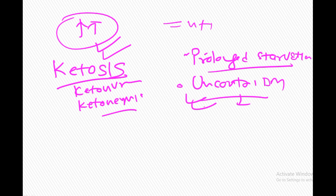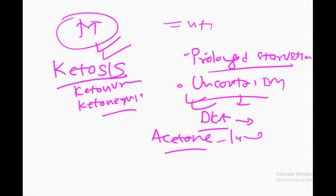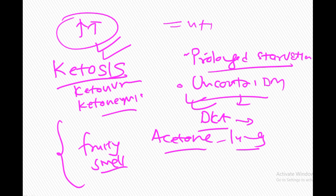In diabetic ketoacidosis, the acetone excreted from the lungs gives a fruity smell. If you smell a fruity smell from a patient, you should always suspect diabetic ketoacidosis in an emergency. When a patient comes in coma, if we smell fruity smell, we suspect diabetic ketoacidosis, then check glucose with a glucometer — if glucose is more than 400, it confirms the suspicion. From the fruity smell alone we can get an idea about diabetic ketoacidosis and treat the patient accordingly.